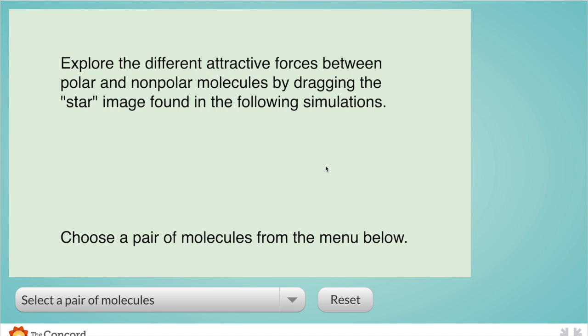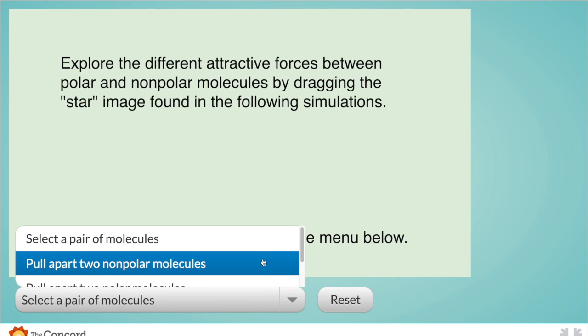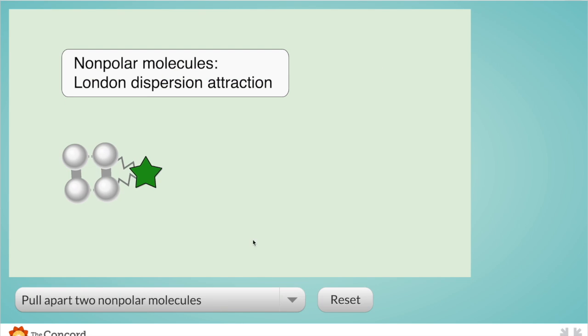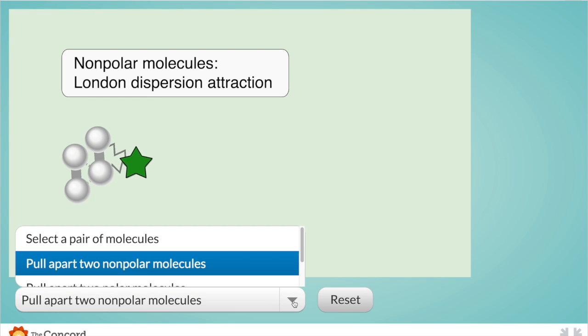This is a great simulation to show you about intermolecular forces. Let's look at two non-polar molecules. They will have London dispersion attraction or London dispersion forces, and you can see a small bit of attraction here. If I try to pull them apart, it takes not that much energy to pull them apart, and they don't really want to go back together. They have to be pretty close to attract to each other. So they're not all that attractive.